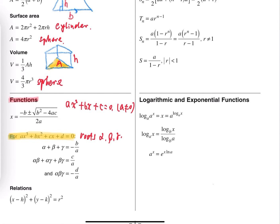The last one in functions is relations, which is for advanced students. The formula listed here is the equation of a circle. The center is at (h, k) and the radius is equal to r. That's the equation of a circle. Let's move on.